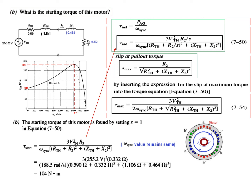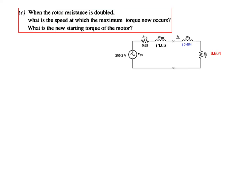Looking back at the torque-speed curve, we can see it starts at 104 N·m when rotor speed is zero — that is, when the rotor is not yet moving. This confirms our calculated starting torque of 104 Newton-meters.